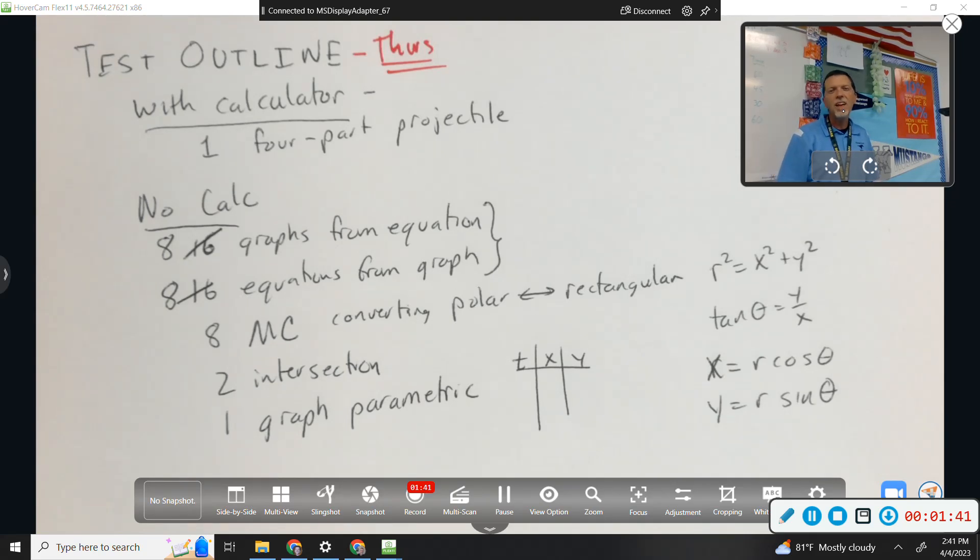So I think fairly straightforward. There's definitely two separate topics on this test, though, right? There's parametric, that's the projectile thing, and the parametric graph, and then there's the polar stuff.